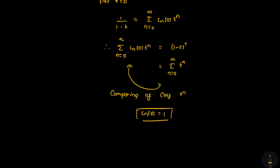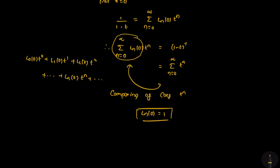Now 1/(1-t) = (1-t)^(-1) = 1 + t + t² + ... So sigma, n=0 to infinity, L_n(0) · t^n = L_0 · t^0 + L_1 · t^1 + L_2 · t² + ... + L_n · t^n. The coefficient of t^n on the right is 1, and on the left is L_n(0).